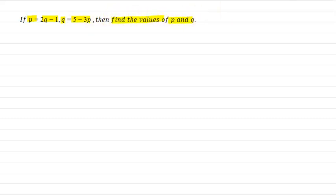Given in the question: p equals 2q minus 1, and q equals 5 minus 3p. We need to find the values of p and q.